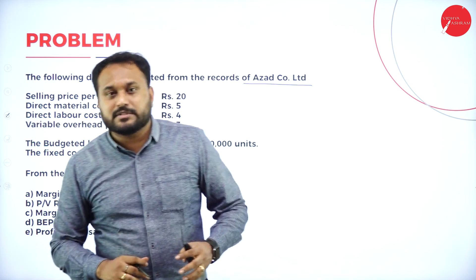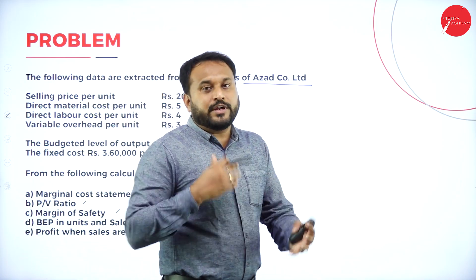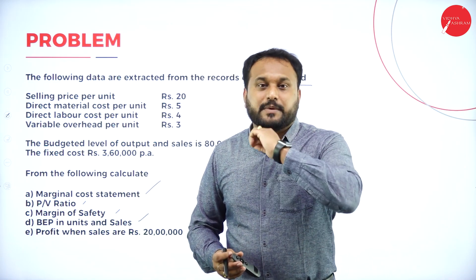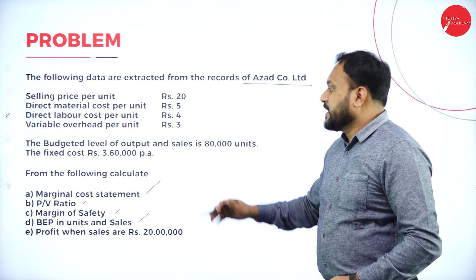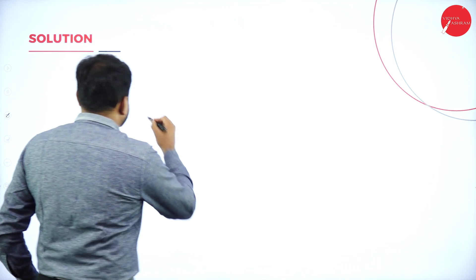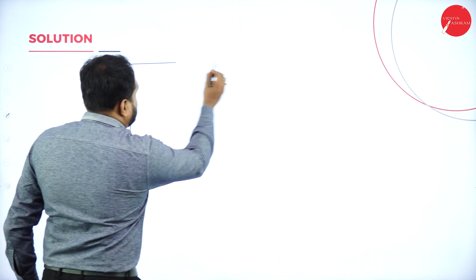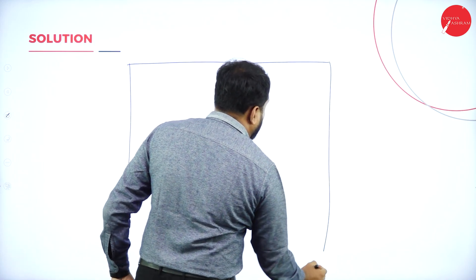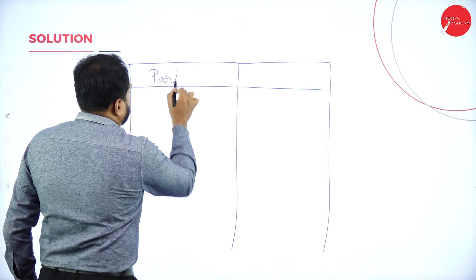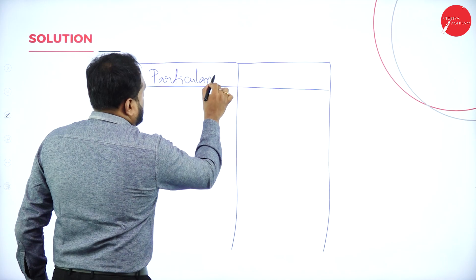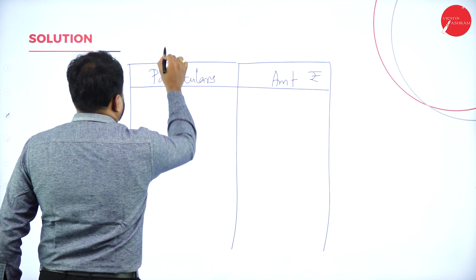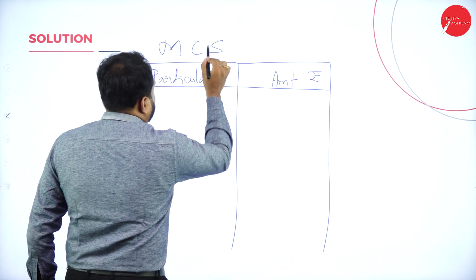The word 'simple' — I use it because I've been doing this for a long time. If you start practising, it will be very simple for you too. Let's go with the marginal cost statement. It's very simple — we have two things: a particulars column and an amount column in rupees. Write 'Marginal Cost Statement' completely at the top.